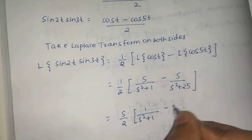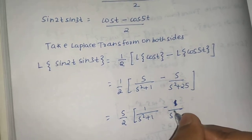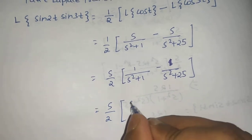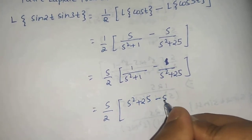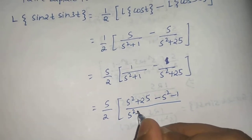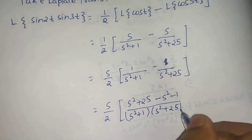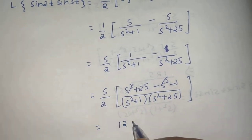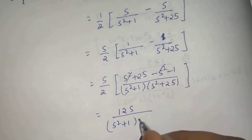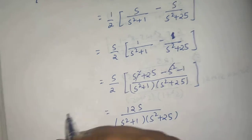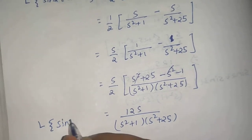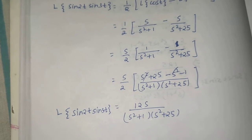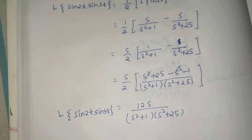We get 1/(s²+1) − 1/(s²+25). Taking LCM: (s/2)·[(s²+25 − s²−1) / ((s²+1)(s²+25))]. The s² terms cancel, leaving 24/2 = 12. So the final answer is L{sin(2t)·sin(3t)} = 12s / [(s²+1)(s²+25)]. Thank you everyone.